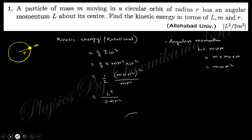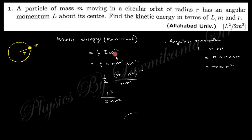Question one: a particle of mass m moving in a circular orbit of radius r has angular momentum L. Find the kinetic energy in terms of L, m, and r. Since this is rotational motion, the rotational kinetic energy is half I omega squared. The moment of inertia of a particle of mass m rotating in a circular path is m r squared.